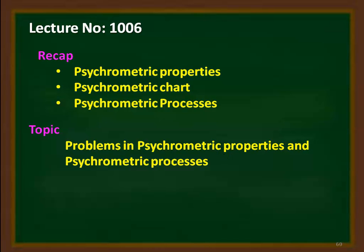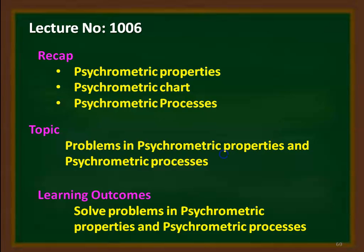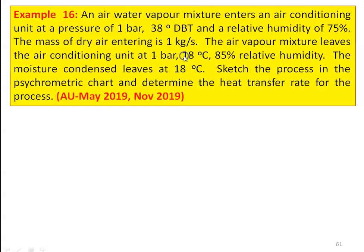In this lecture, the topic is problems in psychrometric properties and psychrometric processes. We continue with the problems. The learning outcome for the student: at the end of the lecture, the student will be able to solve problems on psychrometric properties and psychrometric processes.